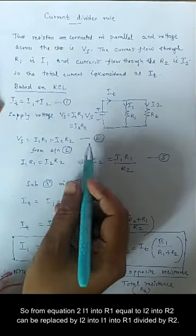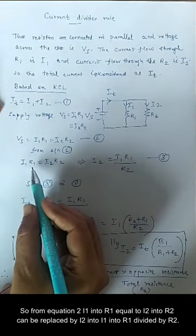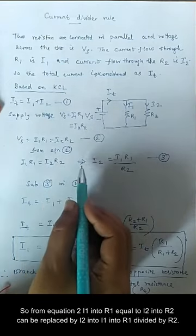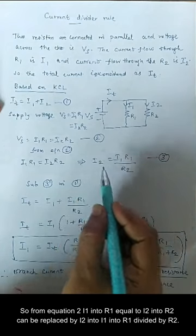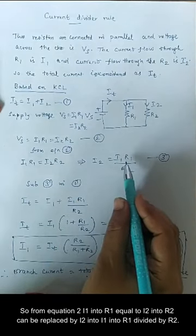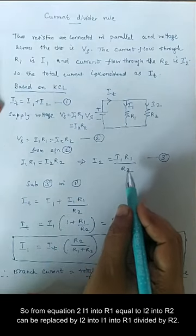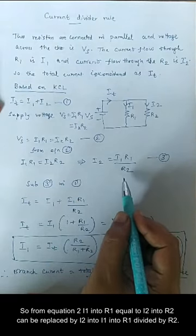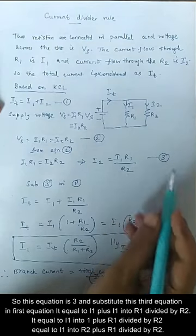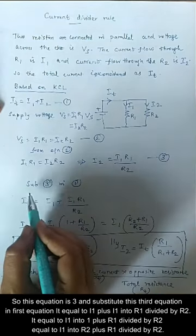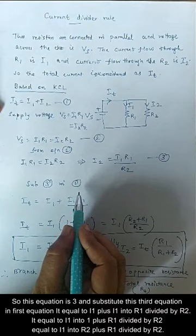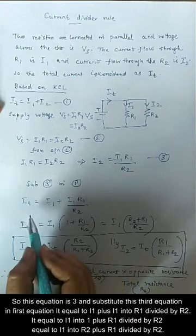From equation 2, I1·R1 equals I2·R2, which can be rearranged to give I2 equals I1·R1 divided by R2. This is equation 3. We substitute this third equation into the first equation.